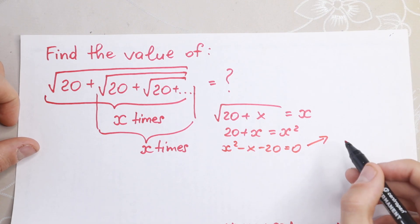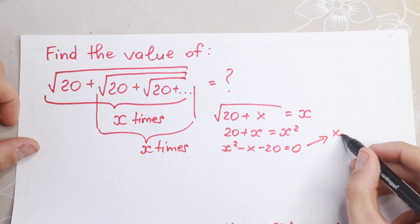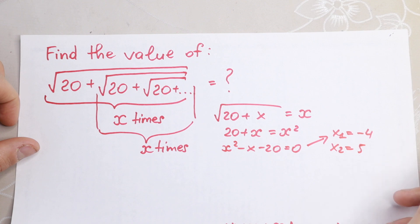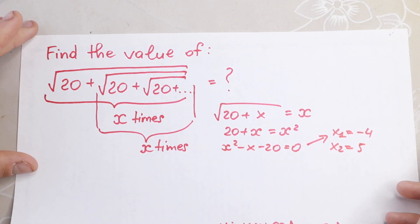And from here we will have our roots: x first equal to minus four, and x second equal to five.